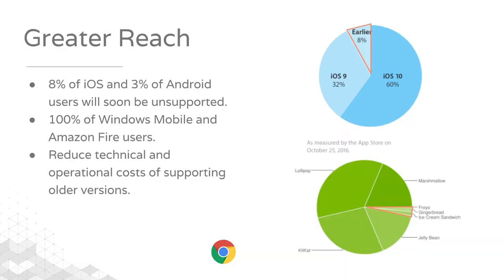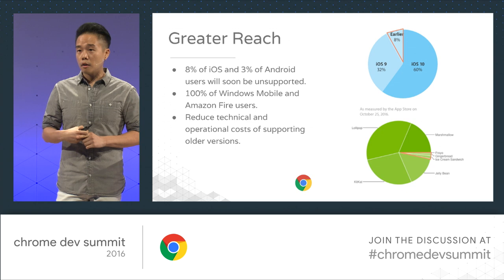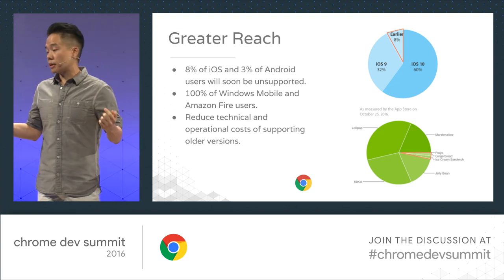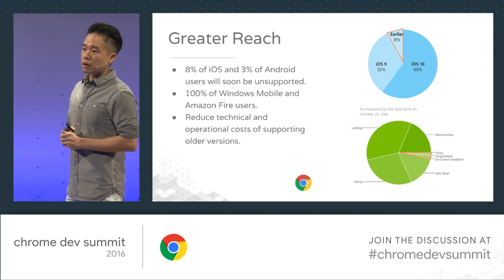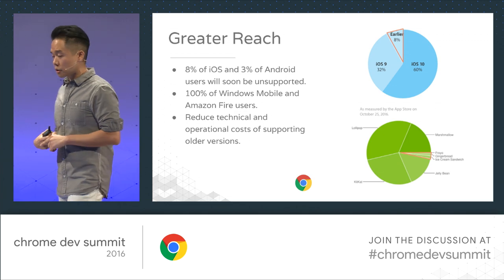Greater reach: on the pie chart, approximately 8% of iOS users and 3% of Android users will soon be unsupported as we slowly deprecate older OS versions. Our progressive web app allows us to support these users. Furthermore, 100% of Windows Mobile and 100% of Amazon Fire devices were unreachable — we never had an Amazon Fire app until our PWA, and still don't have a native Windows Mobile app. This also reduces operational costs, technical costs, and resources, meaning less code and potentially fewer incidents or support tickets.